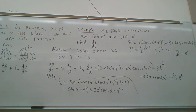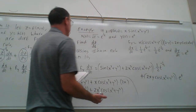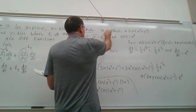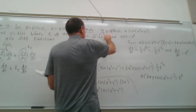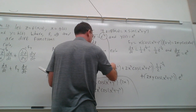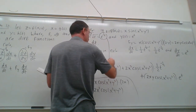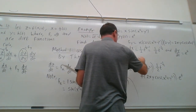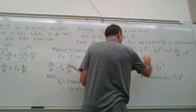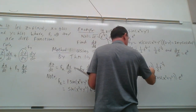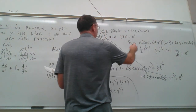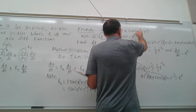Now I'll write this as a function of t only. I know x = t^(1/2), so I substitute that in place of all x's, and y = e^t in place of all y's.